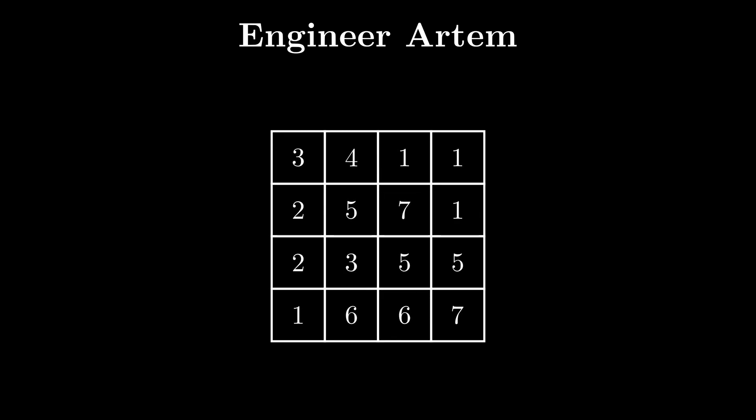In this problem, we are given an n times m grid. Each cell in the grid has a value a[i][j] associated with it.